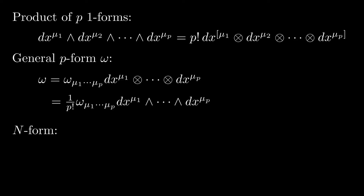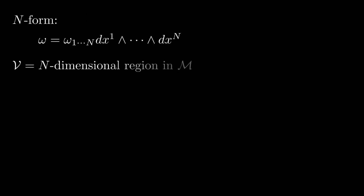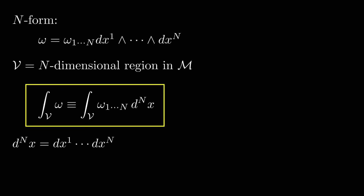For an n-form in particular, omega is just omega sub 1 through n times the wedge products of dx1 through dxn. Now let V denote an n-dimensional region or subset of the manifold M. The integral of an n-form omega over the region V is defined by the integral of the component omega sub 1 through n times d^n x, where d^n x is shorthand for dx1 through dxn. The right-hand side is just an ordinary integral as defined in multivariable calculus.